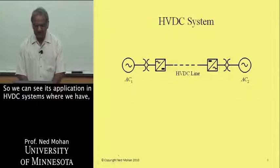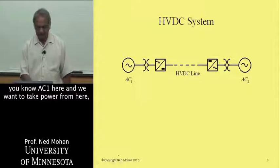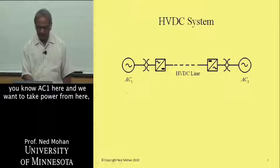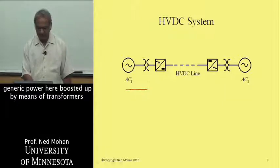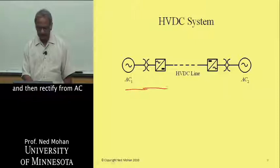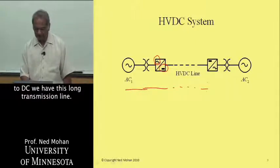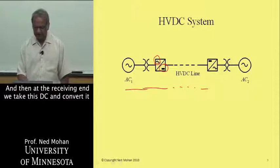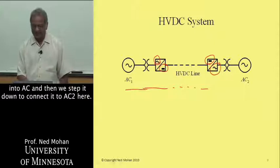We can see its application in HVDC systems, where we have AC1 here, and we want to take power from here, generate power here, boost it up by means of transformers, and then rectify from AC to DC. We have this long transmission line, and then at the receiving end, we take this DC and invert it into AC, and then we step it down to connect it to AC2 here.